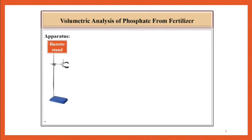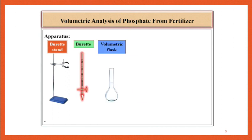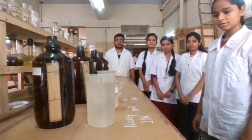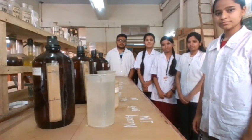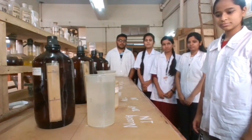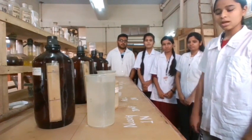Apparatus required: burette stand, burette, volumetric flask, conical flask, funnel, beaker, etc. Chemicals required for the determination of amount of phosphate from fertilizer sample by volumetric method: